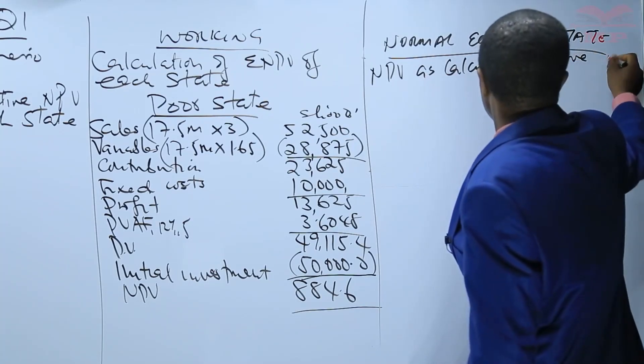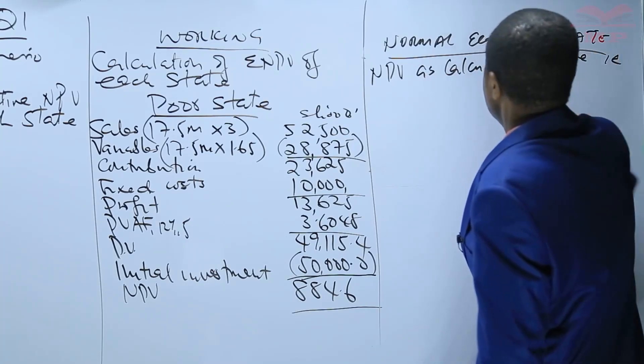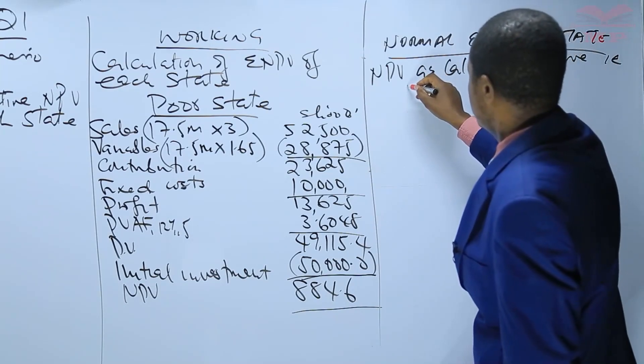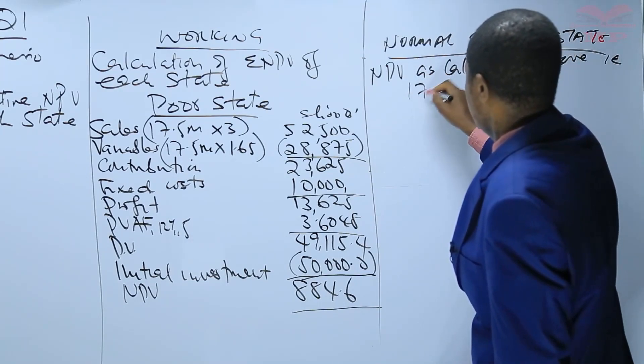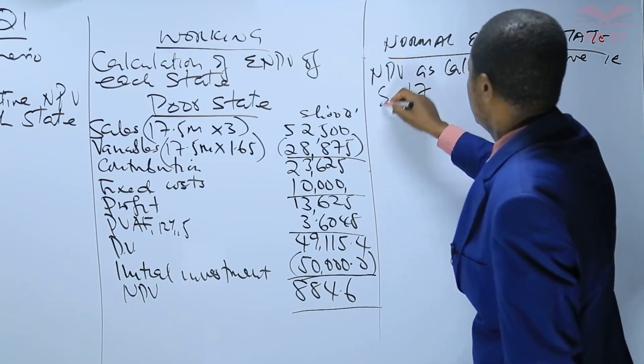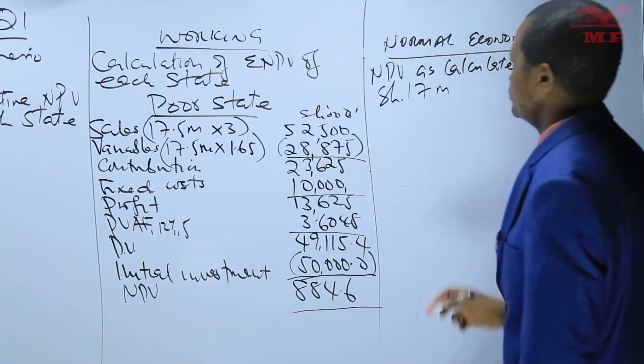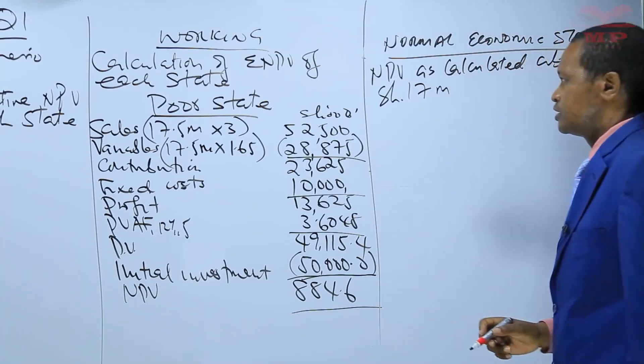The NPV under the normal economic state is 17 million shillings, as previously calculated.